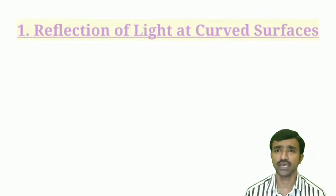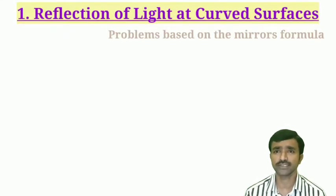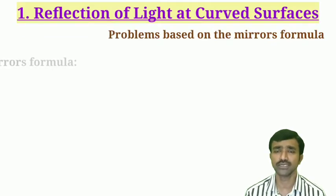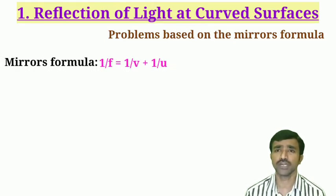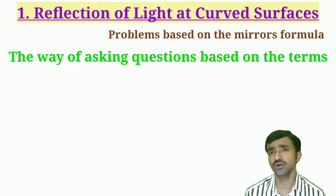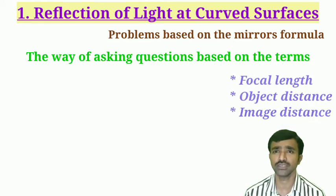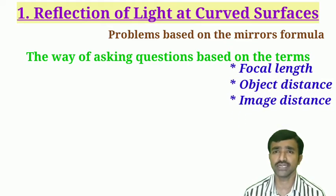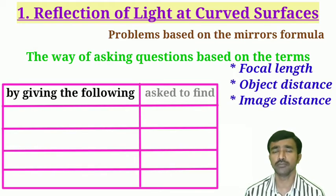Welcome to the class. In this class, I will discuss problems based on the mirror formula: 1/f = 1/v + 1/u. There are different possibilities for questions based on this relation. There are three terms in this formula: focal length, object distance, and image distance. Any two quantities will be given in the problem, and you will be asked to find the third one.